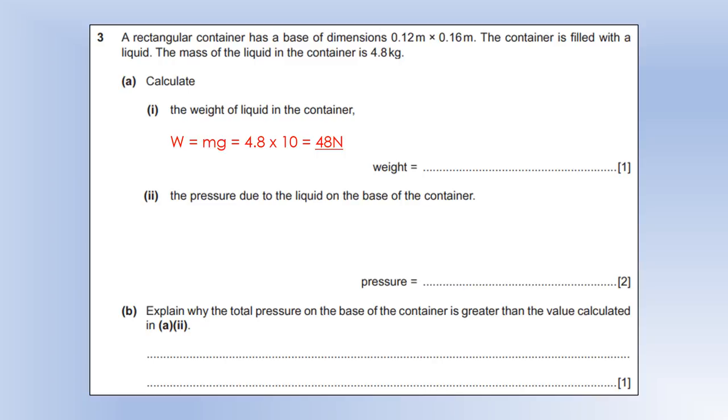Calculate the pressure on the base of the container. So the whole weight of the liquid is going to be acting on the base of the container. And pressure is force divided by area. So we're going to do 48 divided by the base area, giving us 2500 and the unit of pressure being pascals. But newtons per meter squared would be absolutely fine as well.